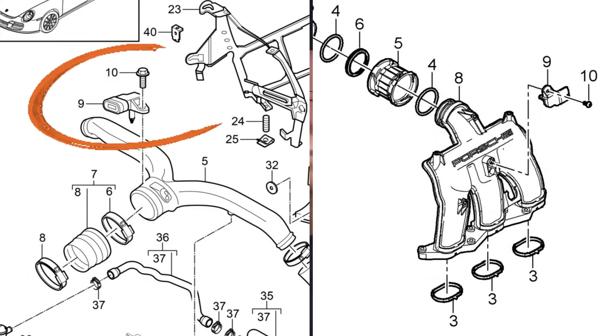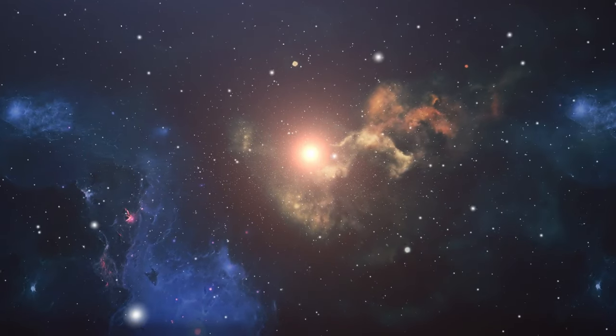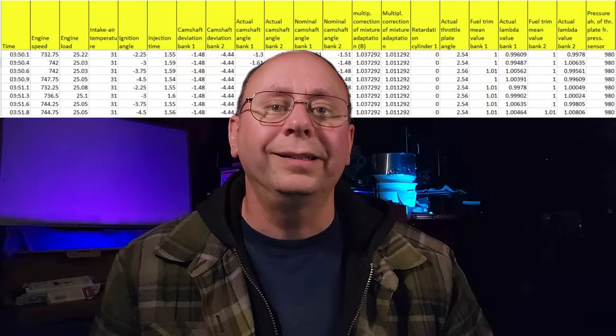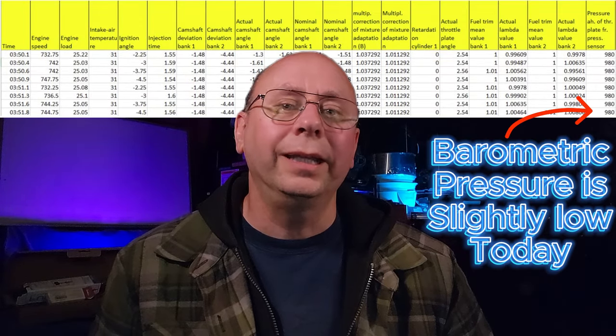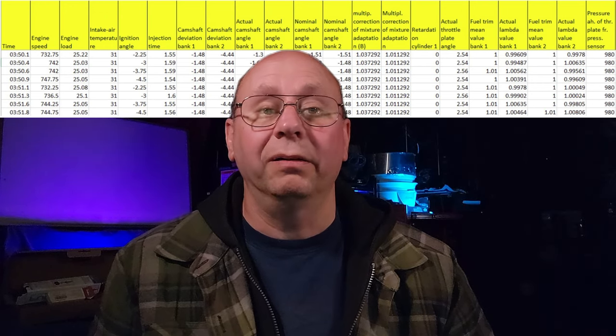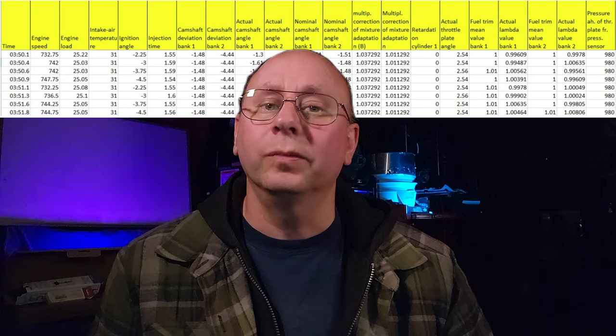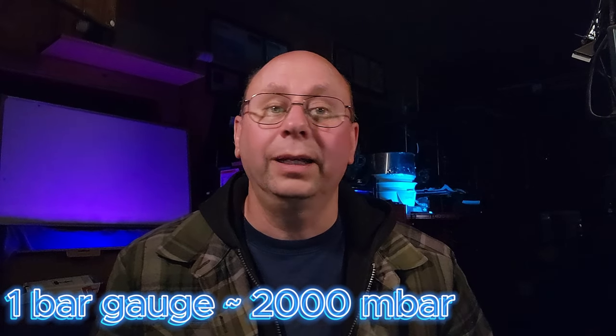The 997.2 Turbo and 991 Turbos got two sensors — one in front of the throttle body and another in the intake manifold. These are absolute pressure transducers that read zero at absolute vacuum, so at sea level you'll see 1000 in this column at key-on or idle. If you're running one bar of boost, you'll see 2000 in this column at sea level.